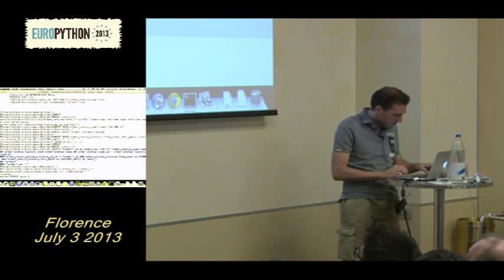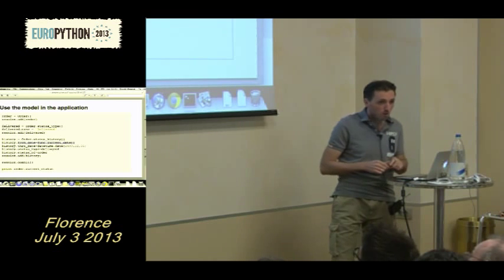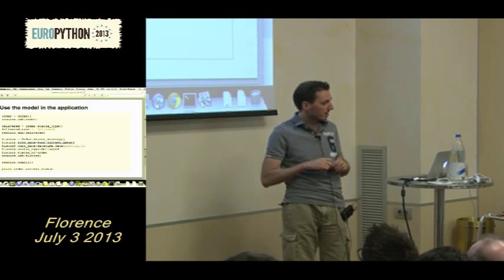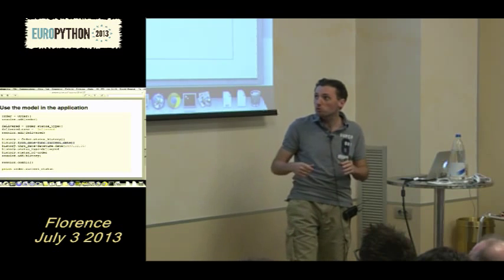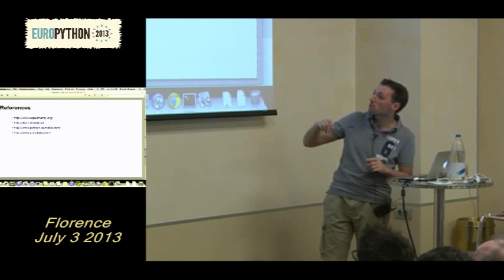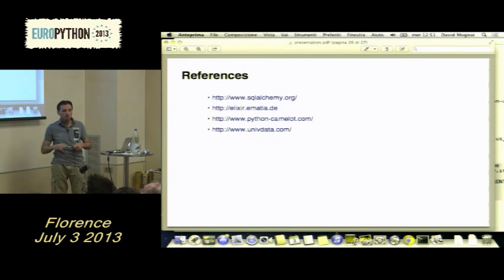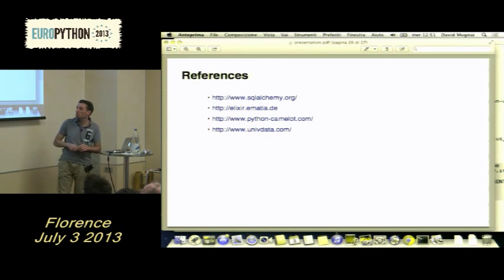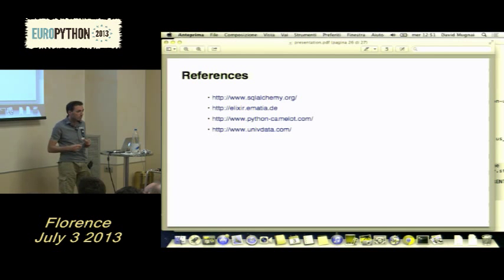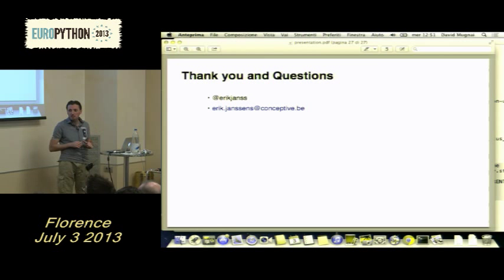What can you use this technique for as well? Of course, for other data model patterns in the book — there are patterns for defining types of objects, defining categories, associating people or roles with objects. All those things you can easily implement with an entity builder. Some references: the SQLAlchemy website, the Elixir website (still up but no longer maintained), the Python Camelot website where you can find the layer on top of declarative implementing all Elixir features, and UniversalData.com for information and books on data model patterns. This concludes this overview of declarative and data model patterns.